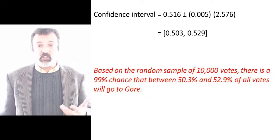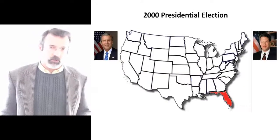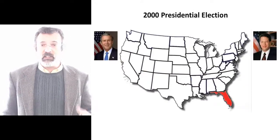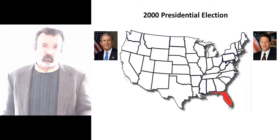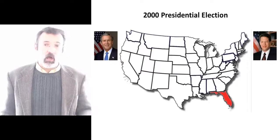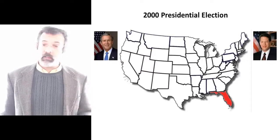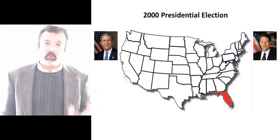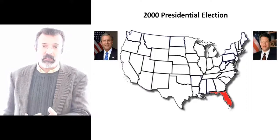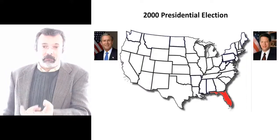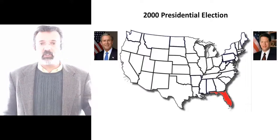Of course, as it turns out, George Bush won Florida, which means that either the sample the media looked at was not random, or, by random chance, the confidence interval that they calculated did not in fact include the true population proportion.